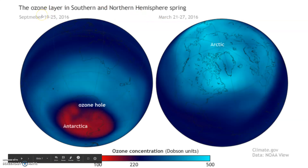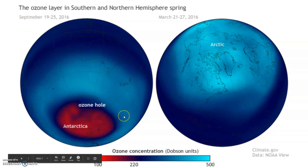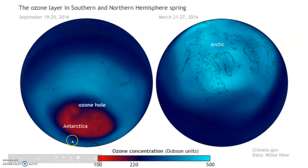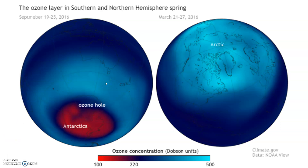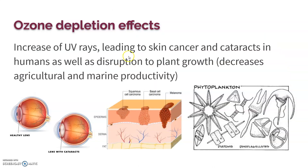This data is from 2016. We see that in September the ozone concentration is at its least, and in Antarctic fall that's when it's the highest, and it just goes back and forth. With the decrease in ozone concentration, we see an increase in UV radiation, because if the ozone molecules aren't there to absorb the UV radiation, that UV radiation gets through.